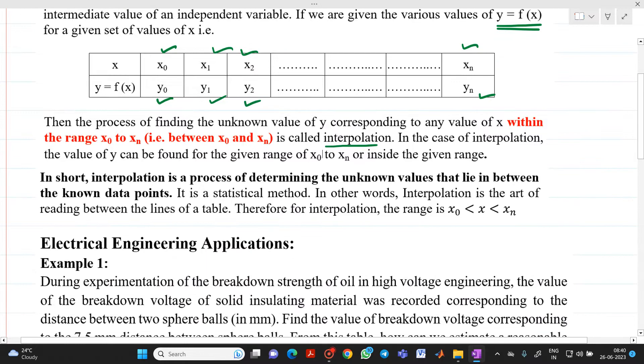In short, we can say that it is a process of determining unknown values that lie between the known data points. x0 to xn or y0 to yn, these are known data points and we are going to find out some unknown value of y corresponding to x. Mathematically, the range will be in between x0 to xn. This x is nothing but the value which is to be interpolated.